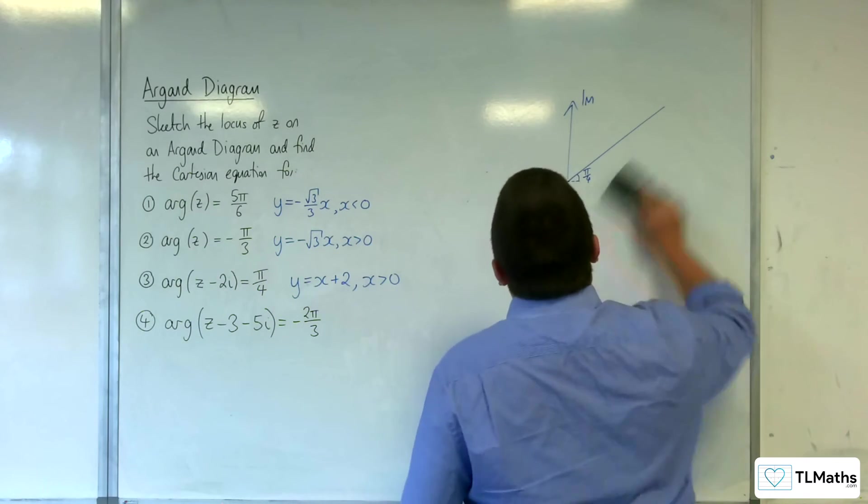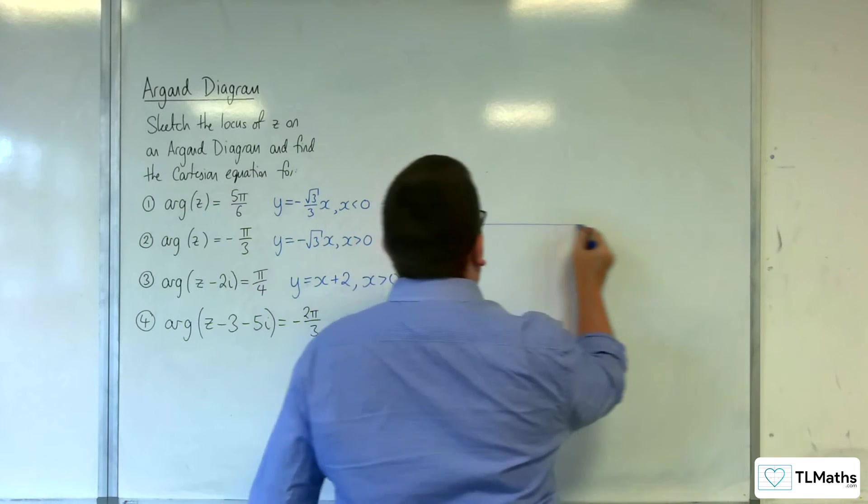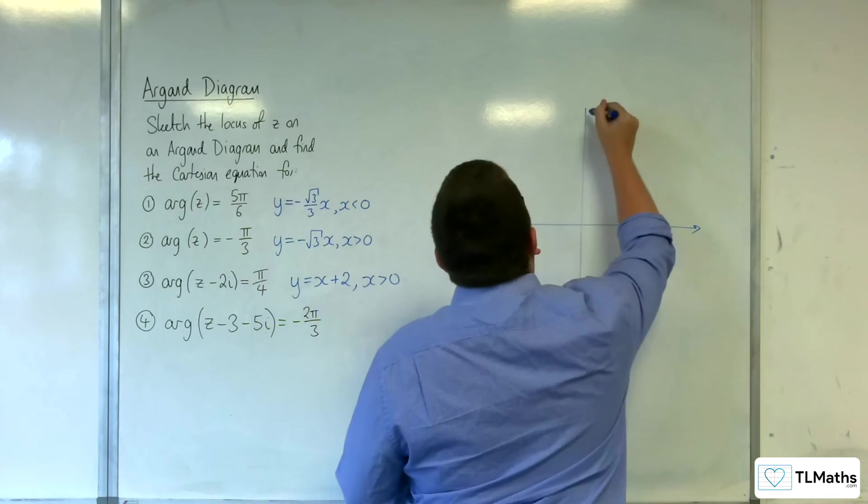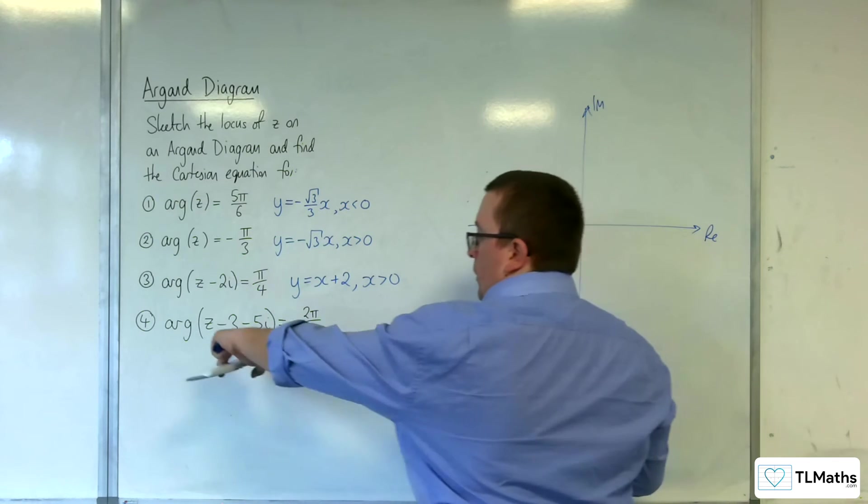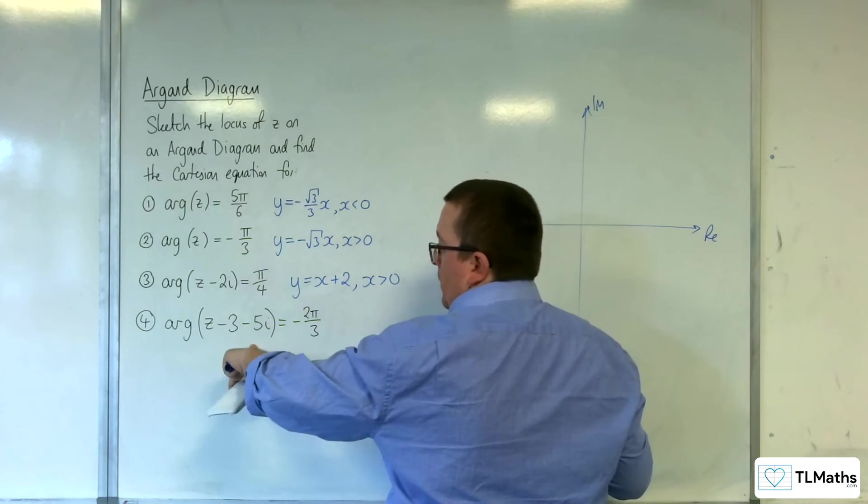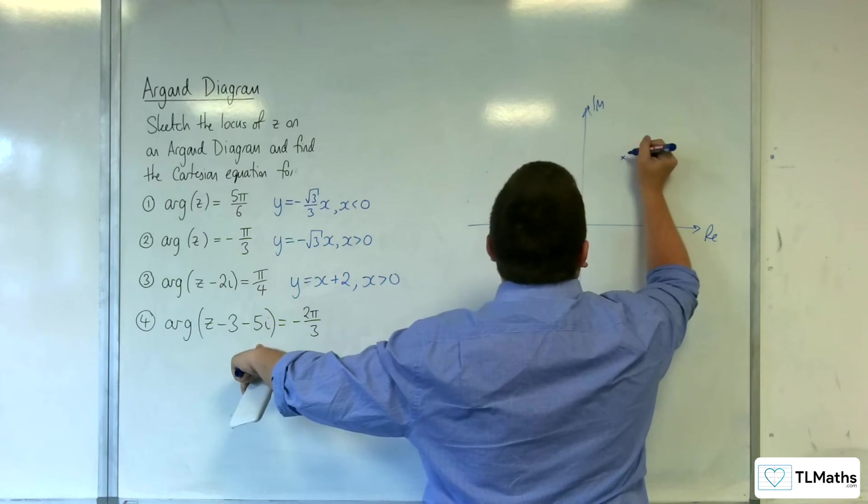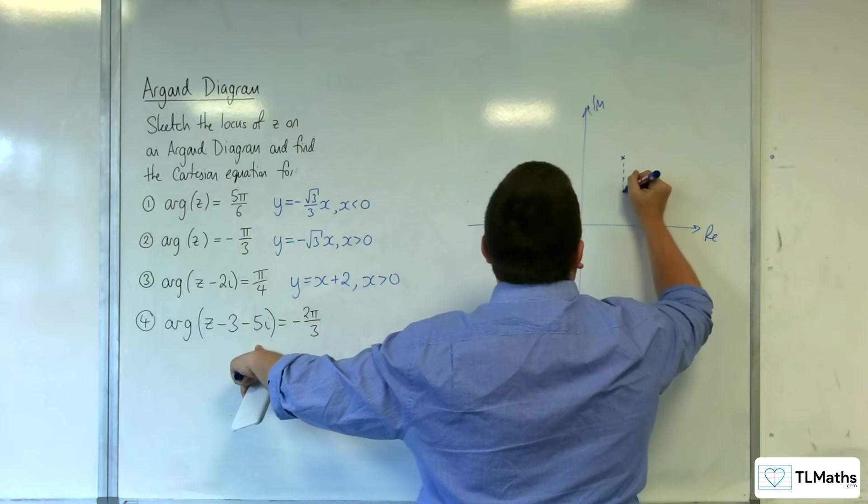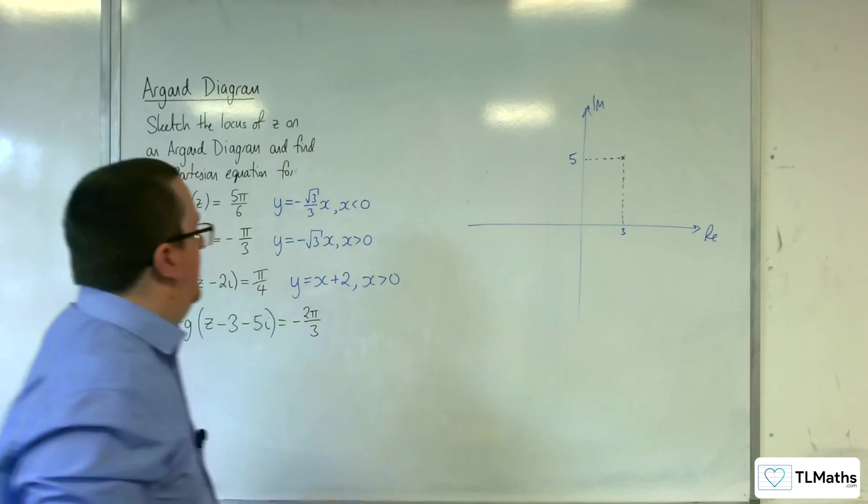Right. Number 4. Real, imaginary. Now, we've got z take away 3, take away 5i. So, 3, 5. So, 3 along, 5 up. Somewhere like that. So, that's where we're starting.